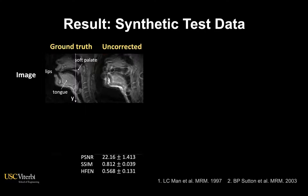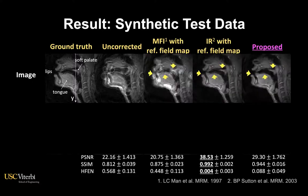Here is an example of the deblurring result on synthetic test data. In the uncorrected images, you can see severe blurring in different regions. This is an extreme example which we chose to showcase the power of this technique.